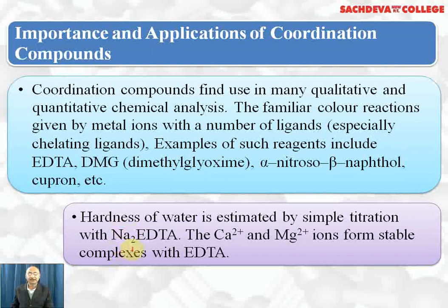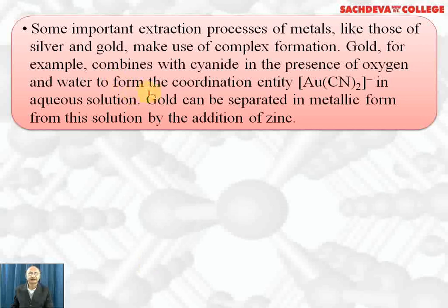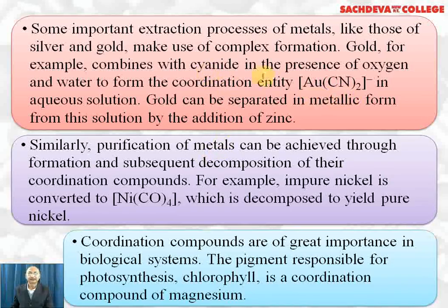EDTA forms stable complexes with calcium and magnesium ions, so the hardness of water can be removed and estimated with the help of EDTA. Some important extraction processes, like extraction of gold and silver, are done by formation of cyanide complexes. Gold reacts with sodium cyanide to form a soluble complex in aqueous solution, which is then reduced with zinc to get gold metal. Silver is extracted similarly, forming [Ag(CN)₂]⁻, which is also reduced by zinc.